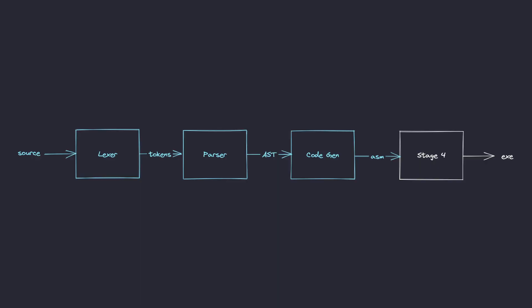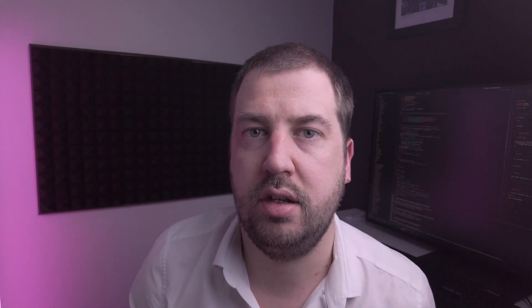The next stage is called code gen. This takes the AST as input and maps it to machine instructions. This is where the actual assembly of the program is created. Here we can see the output of the Clang code gen. Don't worry if it doesn't make any sense — the important thing to know is that this is the machine code representation of your program.